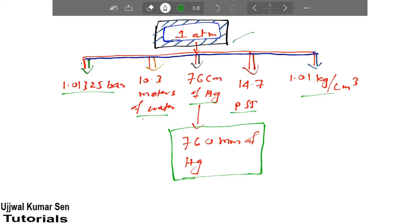Basically 1 atm is equal to what we know. We know this thing and this one. These two we know very frequently. We have used these two terms right, but other than these two things we don't know.